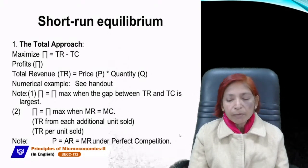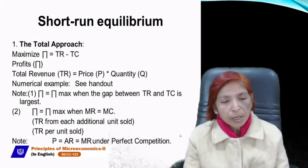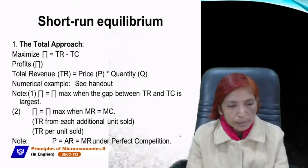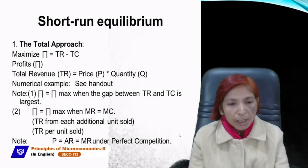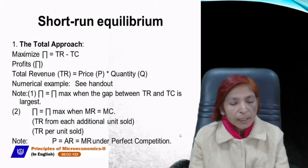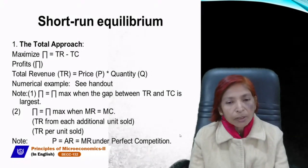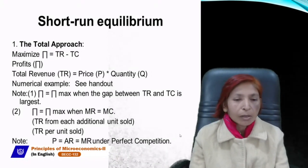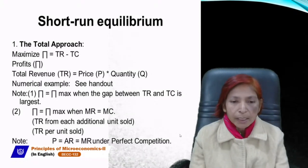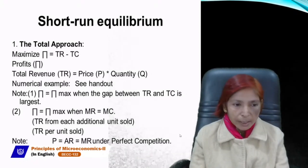Where the gap between TR and TC is largest, the firm earns maximum profit. When the gap is minimum, profit is less. When TR and TC are equal, that is the breakeven point — no profit or loss.